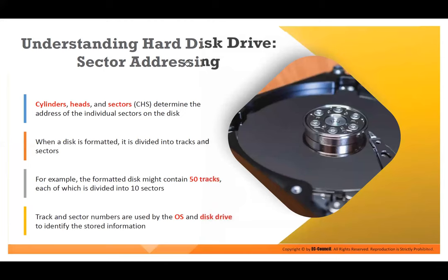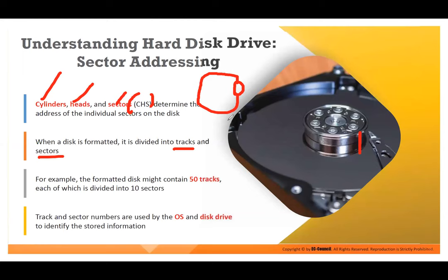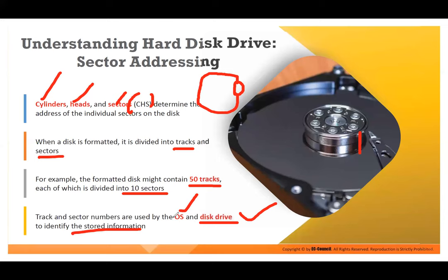Sector addressing — we talked about cylinders, heads, and sectors, called CHS. When a disk is formatted, it is divided into tracks and sectors. A sector is a small unit, and a track is the complete circular one — the track consists of multiple sectors. For example, a disk might contain 50 tracks, each divided into 50 sectors, giving 500 sectors total. Track and sector numbers are used by the OS and disk drive to identify where data is stored. If you delete a file and want to retrieve it, you need to know the track and sector numbers.